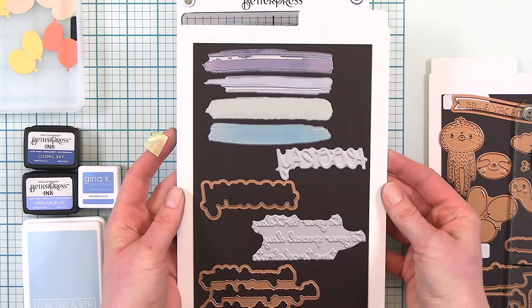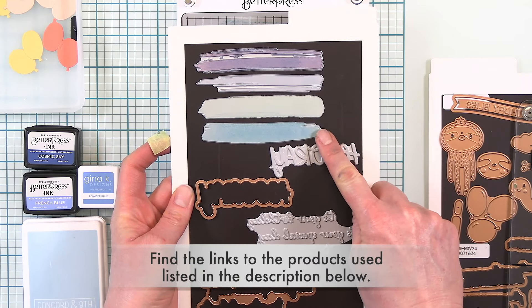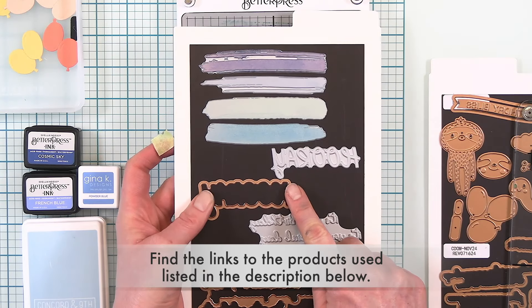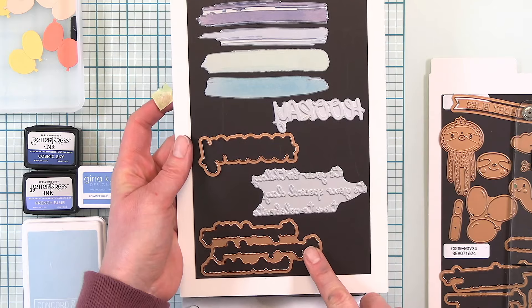To start off I'm using the November Better Press Club which is called Paint the Town. It has four paint swatches there, a gray sentiment with a coordinating die and some smaller sentiments also with coordinating dies.